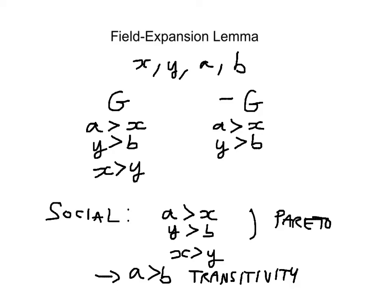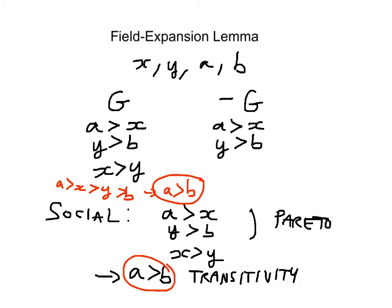A must be preferred to B by transitivity at the social level. And this must also be the preference of the members of G — otherwise the members of G would also be intransitive. We also have A preferred to X, X preferred to Y, and Y preferred to B, so all members of G, if they are transitive and rational, must also prefer A to B. So they are decisive, because their individual preference dictates the social preference.